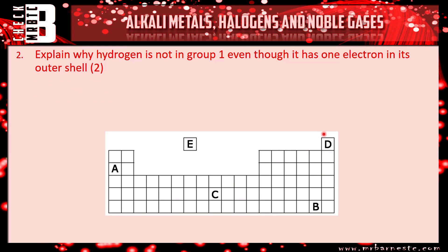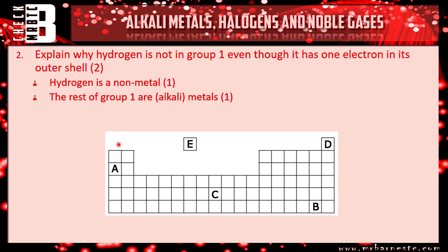Question two: explain why hydrogen is not in group one even though it has one electron in its outer shell. The reason is that hydrogen is not a metal. You get your second mark for saying it's a non-metal — and so what? All of the rest of group one are alkali metals. You also could have said the chemical properties are different, so hydrogen reacts very differently chemically to the rest of group one.